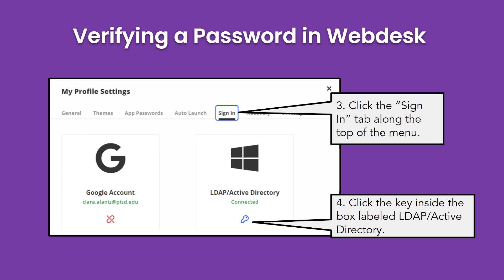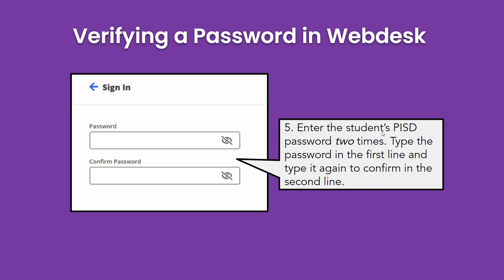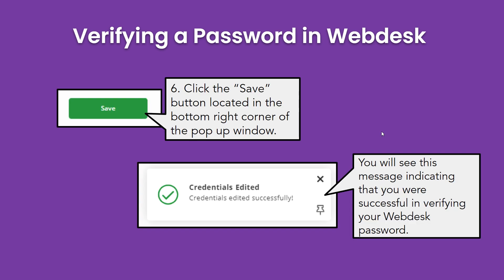A window will appear and along the top select the tab titled Sign In. One of the blocks is labeled LDAP Active Directory. Click the key icon inside that block. A window will appear, and in this step you will enter the student's PISD password twice. The student enters their password on the first line and on the second line they type it again to confirm it.